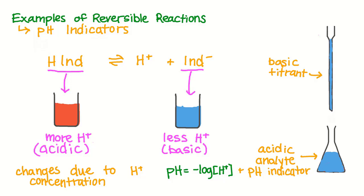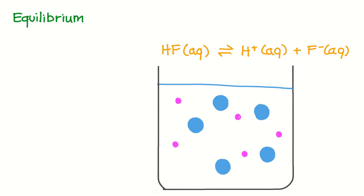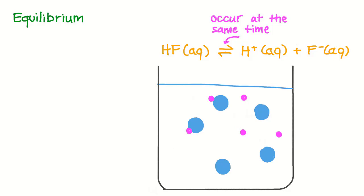Now these examples shouldn't suggest that for all reversible reactions, we have the forward reaction occurring in some conditions and the reversed reaction occurring in other conditions. Sometimes both the forward and reversed reactions are happening at the same time. This is common in reactions that involve weak acids and weak bases. For example, when we introduce the weak acid hydrofluoric acid to water, it will dissociate and form H-plus ions and F-minus ions. But then the F-minus ions are capable of reacting with the H-plus ions to form hydrofluoric acid. Then these newly formed molecules of hydrofluoric acid can dissociate again, while some of the existing F-minus ions will react with the hydrogen ions to form hydrofluoric acid. In other words, the forward and reverse reactions are occurring at the same time.